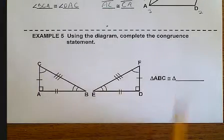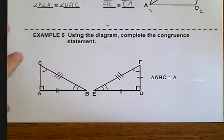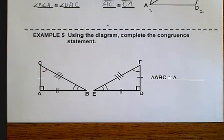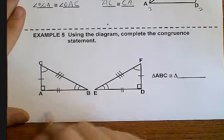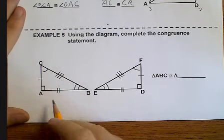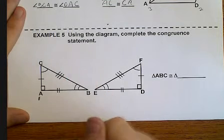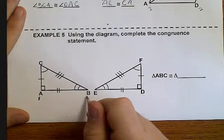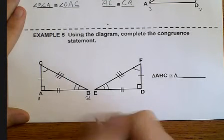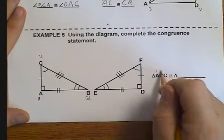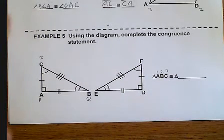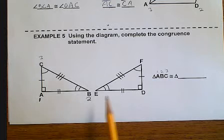Here we're going to talk about example number five. We want to complete the congruency statement. Well, I like alphabetical order. So, we're going to grab this first one in alphabetical order. We're going to call A the first one. Then we're going to go to B the second one. And C the third one. ABC.